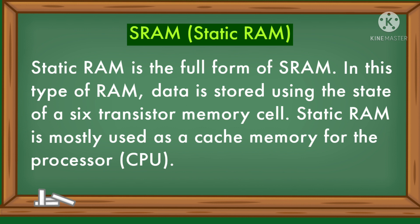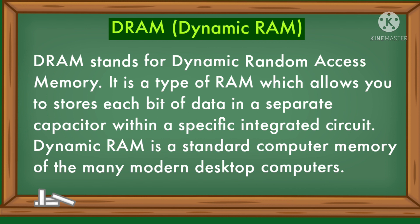Static RAM is mostly used as cache memory for the processor. DRAM, or Dynamic RAM — DRAM stands for Dynamic Random Access Memory. It is a type of RAM which allows you to store each bit of data in a separate capacitor within a specific integrated circuit. Dynamic RAM is the standard computer memory of many modern desktop computers.